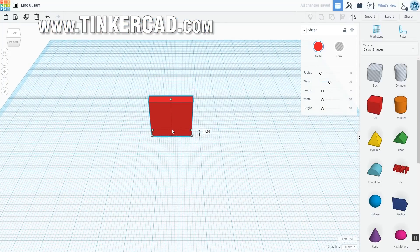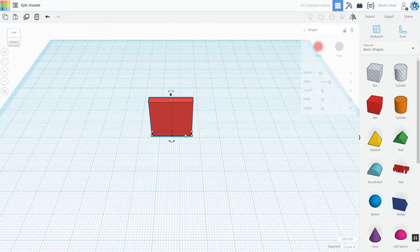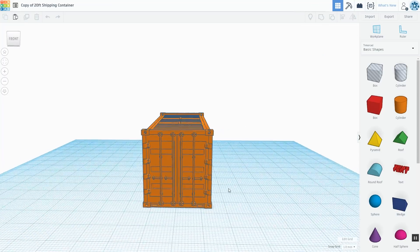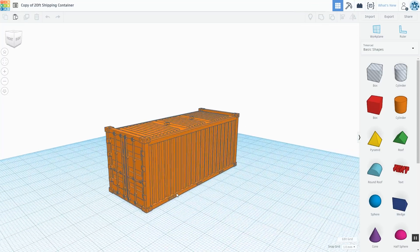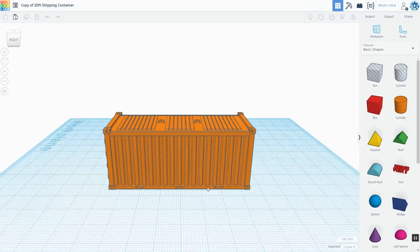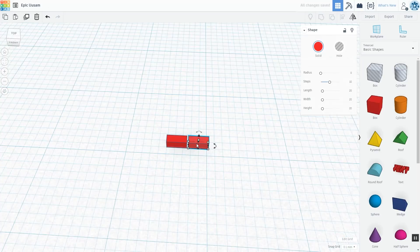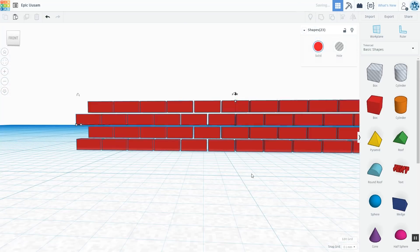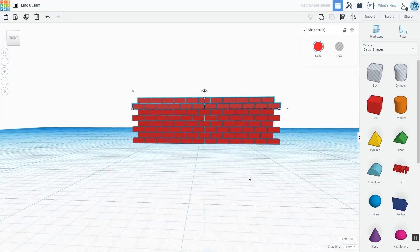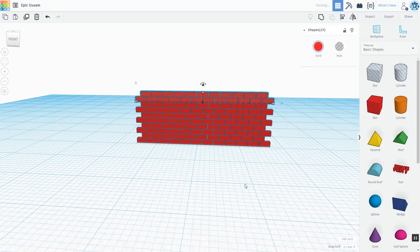I've designed all sorts of models using this free online 3D building tool including this 20 foot shipping container. Basically your imagination is the limit. Look at how easy it was to create a HO scale brick wall in just a few minutes. If you had the patience you could build an entire house doing this.